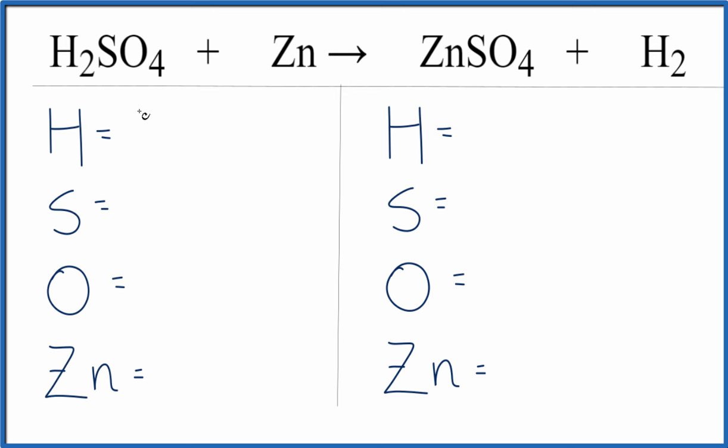We have two hydrogen atoms, one sulfur, four oxygen atoms, and one zinc.